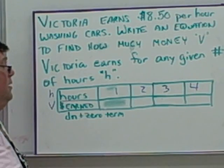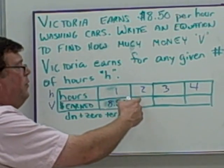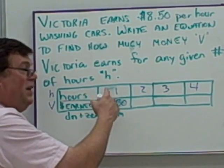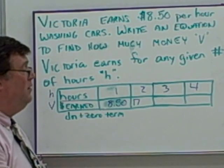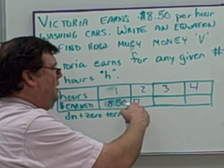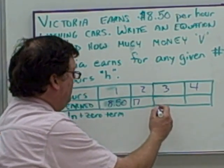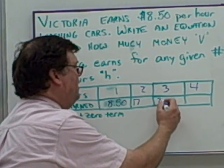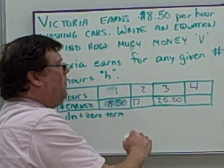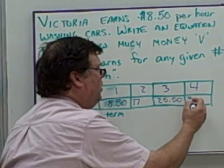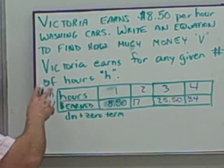After one hour, she gets $8.50. Two hours, she'd get two times $8.50 — $8.50 for the first hour and $8.50 for the second — a total of $17. A third hour, that's three times $8.50, which gives $25.50. And then an additional $8.50 for the fourth hour brings the total to $34.00. That's the table — I've converted this word problem into a table of values.